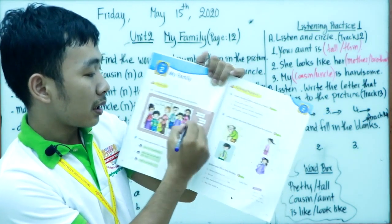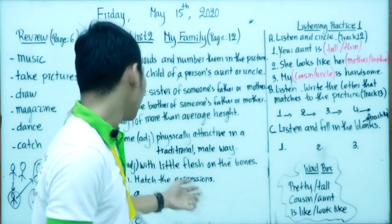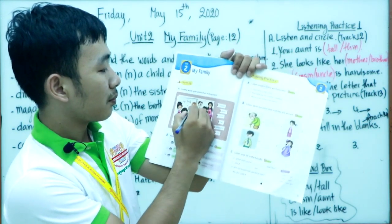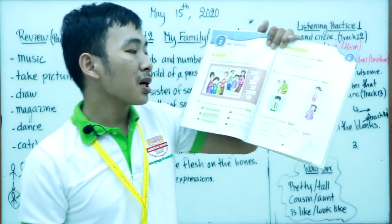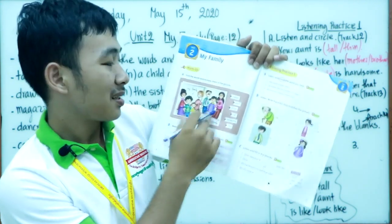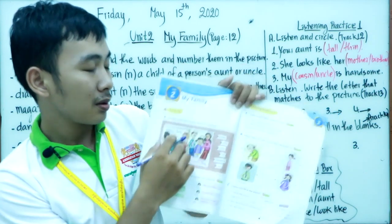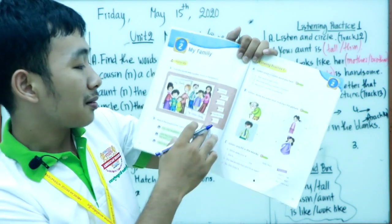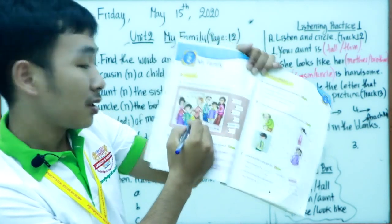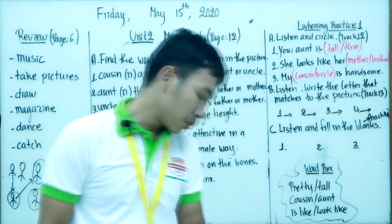Number 4 is 'tall' — we already said tall means more than average height, so you can find the tall person and write number 4. Number 5 is 'handsome' — look at all the characters and find the most handsome one; write number 5 there. Number 6 is 'thin' — find the thin character, which is the girl in the green. That's it for Exercise A.